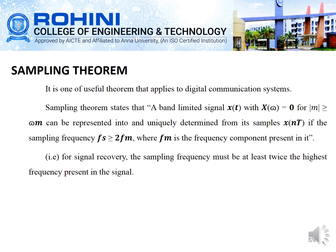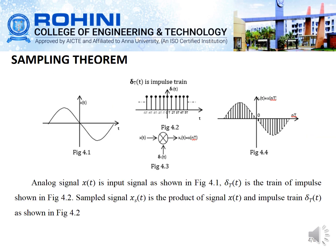For signal recovery, the sampling frequency must be at least twice the highest frequency present in the signal. The first waveform shows the analog signal and the second is the train of impulse signals. These two signals are multiplied together, and we are taking the product of these two signals to finally get the sampled version of the signal.